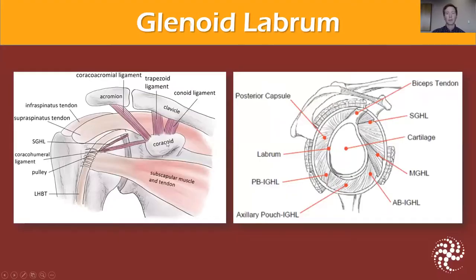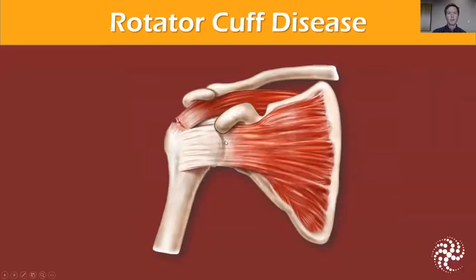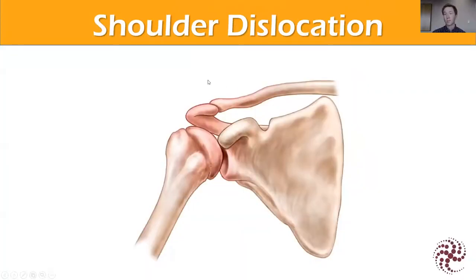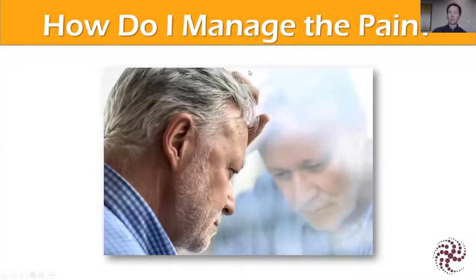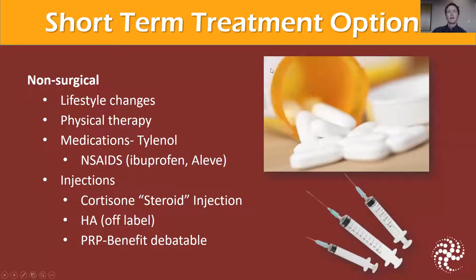Most of my talk is going to cover the soft tissue problems — particularly labral injuries, rotator cuff injuries, and problems with arthritis. We'll also talk about how we manage this pain. Some of the non-surgical early treatments we recommend — and it's very important to trial conservative treatments. It's the best way to get simple, sometimes long-lasting relief with minimal intervention.